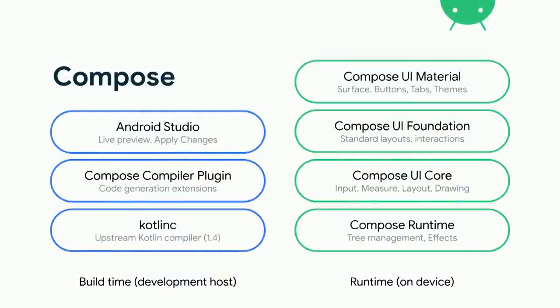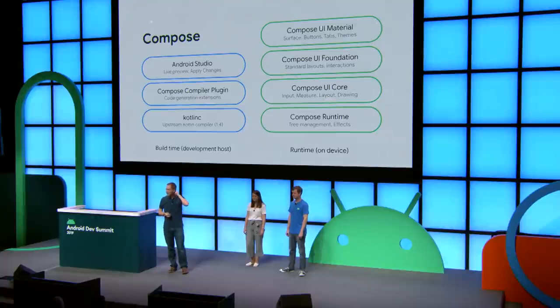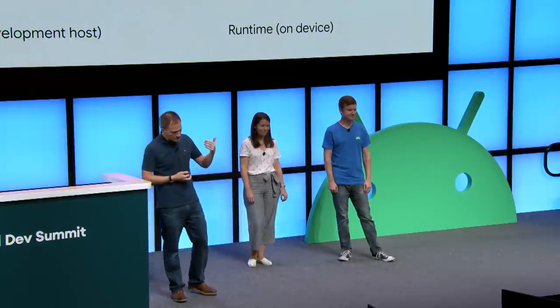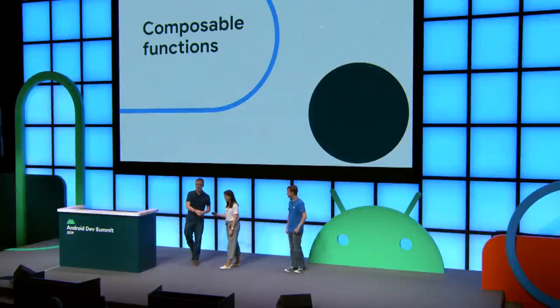This is what the technical stack of Compose looks like. On the build-time side we use a slightly modified Kotlin compiler, working closely with JetBrains, adding compiler extensions to enable our Compose compiler plugin. On the runtime side, at the bottom Compose is a runtime that deals with trees — it knows how to produce trees but nothing about UI, so it could be reused for non-UI purposes. Then we have the UI core, UI foundations, and finally all the widgets on top. Now Clara will tell you more about how Compose actually works when you write code.